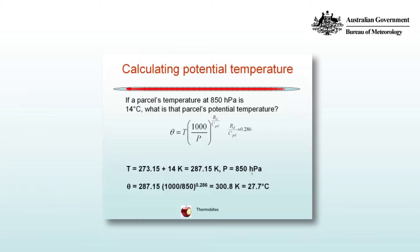Let's do a sample calculation. If a parcel's temperature at 850 hectopascals is 14 degrees Celsius, what's its potential temperature? Converting to Kelvin: T = 273.15 + 14 = 287.15 K. The initial pressure is 850 hPa, final pressure is 1000 hPa. Using Poisson's equation: θ = 287.15(1000/850)^0.286 = 300.8 K or 27.7°C.